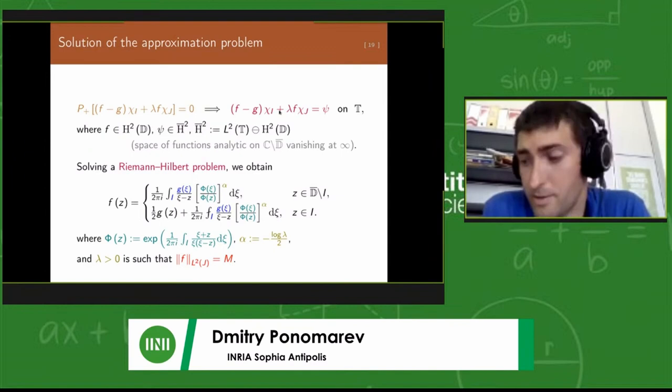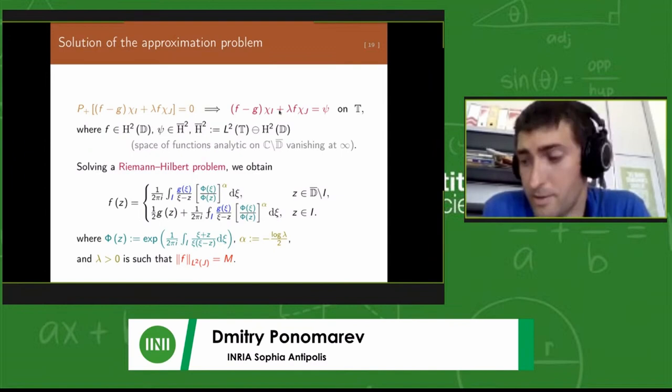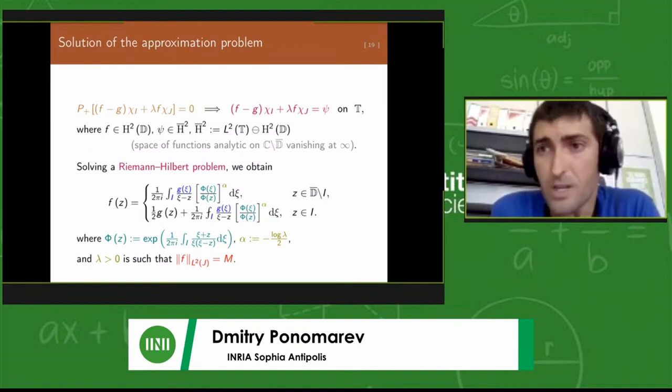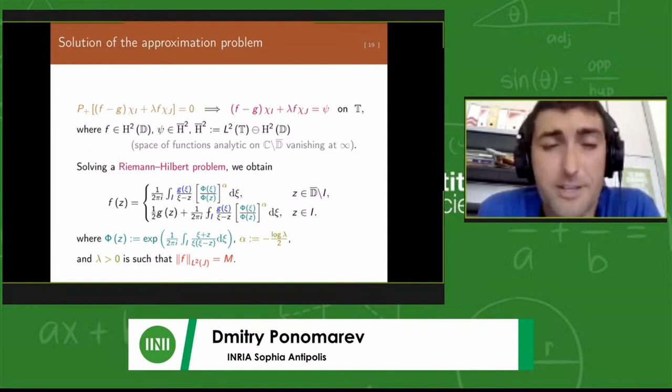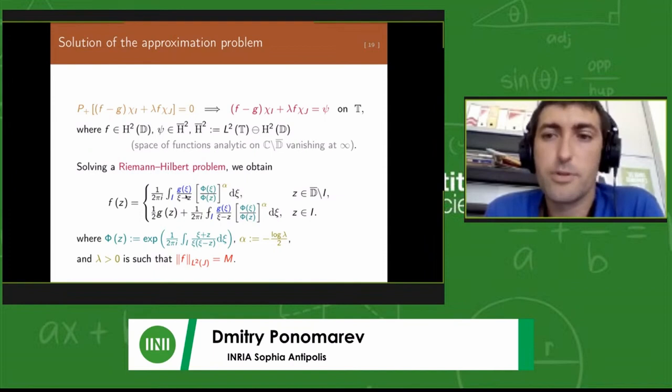The constraint would be just bounding this value that goes to infinity, bounding it by a fixed number m. The problem that we want to solve is to approximate a given function g by f in H2 class such that its L2 norm on j is bounded. Such a problem can be shown to have a unique solution and the constraint will be necessarily saturated.